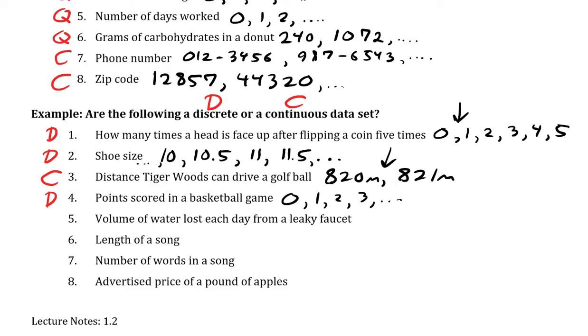Volume of water is going to act similar to distance Tiger Woods can drive a golf ball. That will be continuous. Because we could have maybe 4 liters or 5 liters, but we could have anything in between. Still logical. You can measure volume.